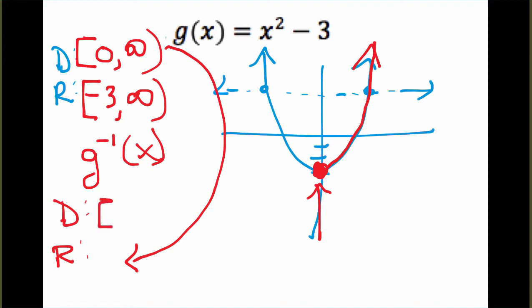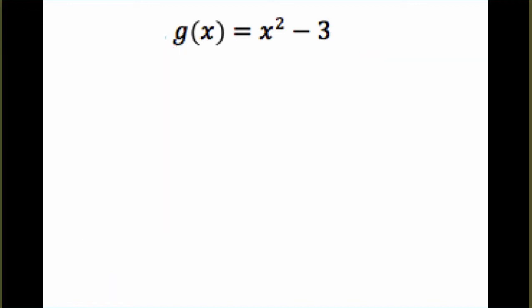When we find the inverse, even without finding the equation for the inverse, we already know what the domain and range of the inverse will be. The domain from g(x) will become the range, and the range will become the domain. So the domain of our inverse will be negative three to infinity, and the range will be zero to infinity. Those you can just check at the end, but let's find the actual inverse algebraically. We'll use the same process that we used in the previous example.